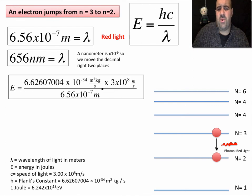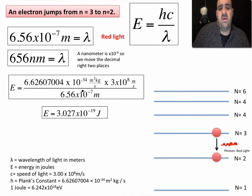Once you do that, once you multiply this out, you get an answer. 3.027 times 10 to the negative 19th joules. Seems like a very small number, but that's the energy of one photon as it drops from n equals 3 to n equals 2 for a hydrogen atom.